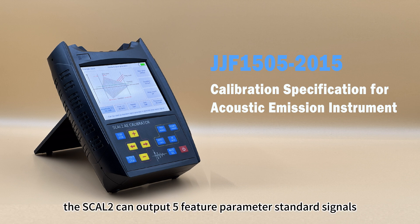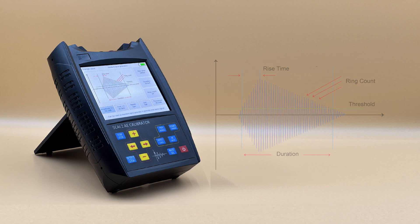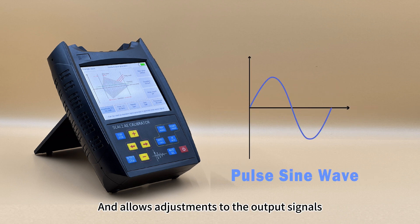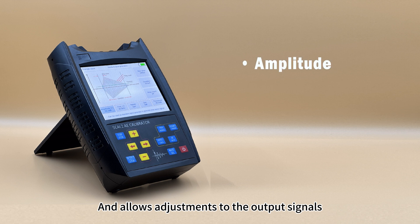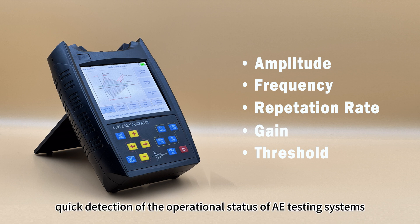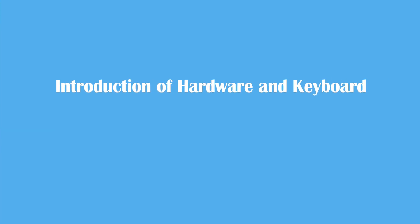The SCAL-2 can output five feature parameter standard signals, such as triangle wave, double exponential wave, monopulse, continuous sine wave, and pulse sine wave, and allows adjustments to the output signal's amplitude, frequency, repetition rate, gain and threshold. It is suitable for quick detection of the operational status of AE testing systems.